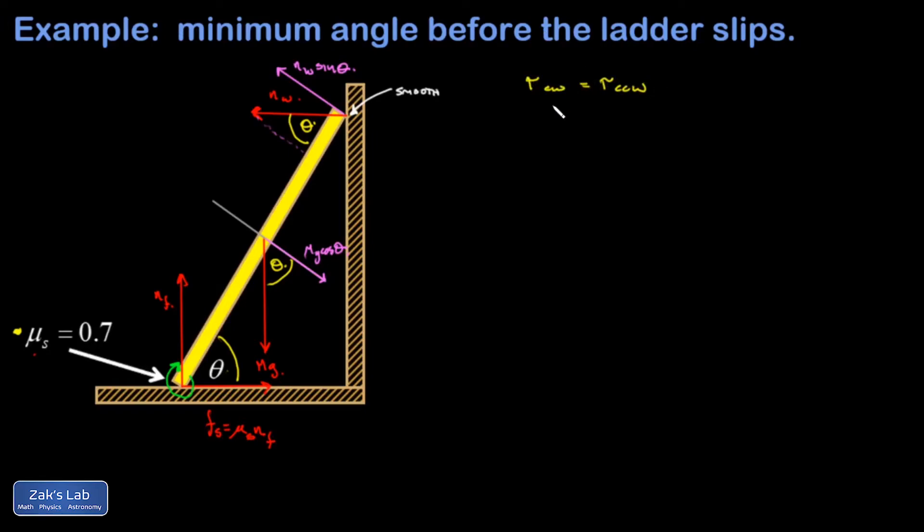In other words the clockwise torques have to cancel the counterclockwise torques, and I have mg cosine theta exerted through a lever arm of l over 2 (that's the clockwise stuff) and then I have the normal force exerted by the wall times the sine of theta exerted through the entire length of this thing.